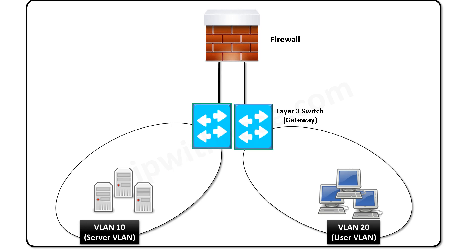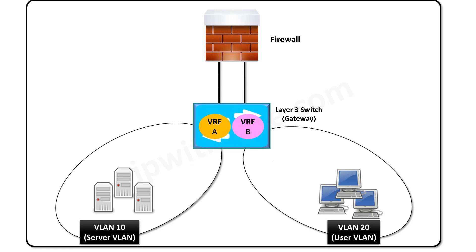One way to route the user-to-server VLAN traffic through the firewall is by installing a separate layer 3 switch, where one layer 3 switch will be dedicated for each VLAN. However, this means additional space, power, and cost of buying and maintaining the additional switch, which is very high.